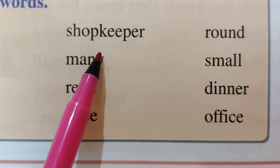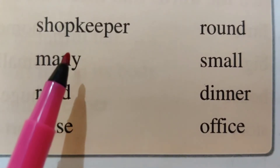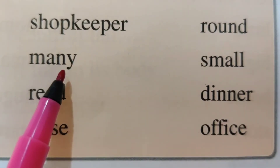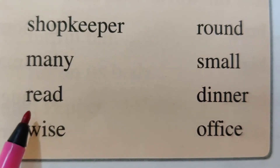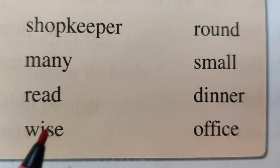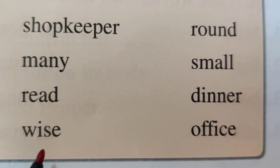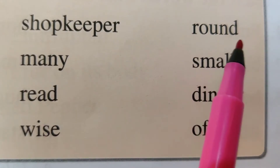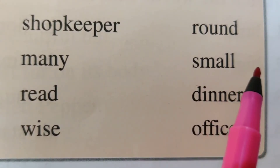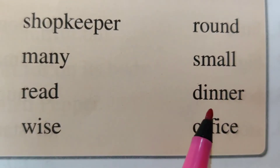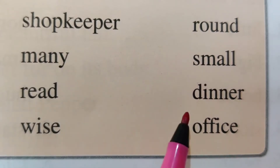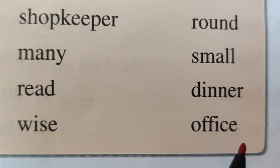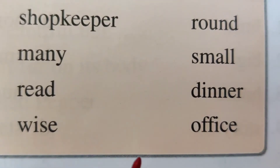S-H-O-P — K-E-E-P-E-R — shopkeeper. M-A-N-Y — many. R-E-A-D — read. W-I-S-E — wise. R-O-U-N-D — round. S-M-A-L-L — small. D-I-N-N-E-R — dinner. O-F-F-I-C-E — office. Like this we have to learn the spellings and write them down in your notes two times.